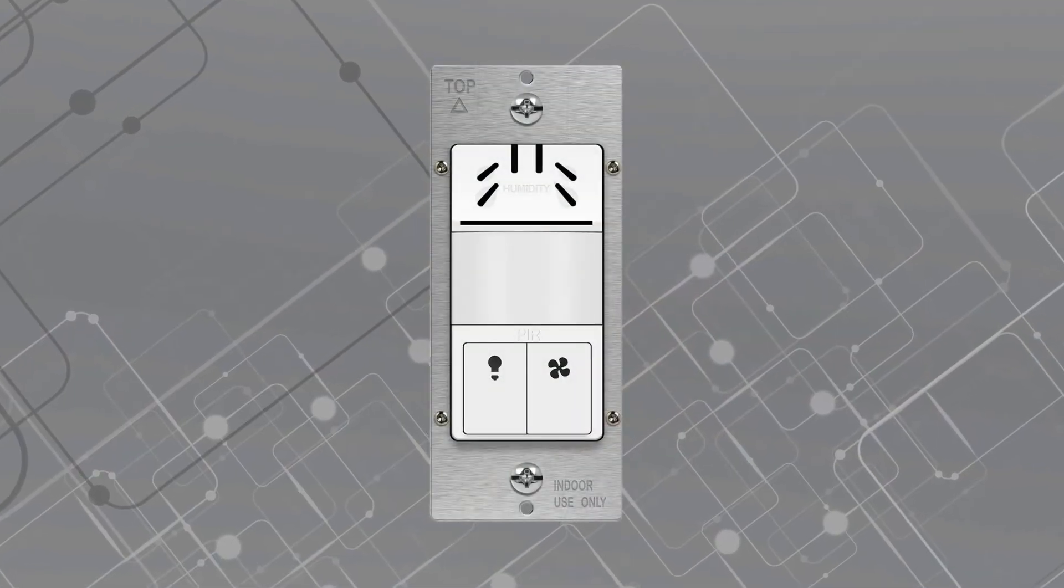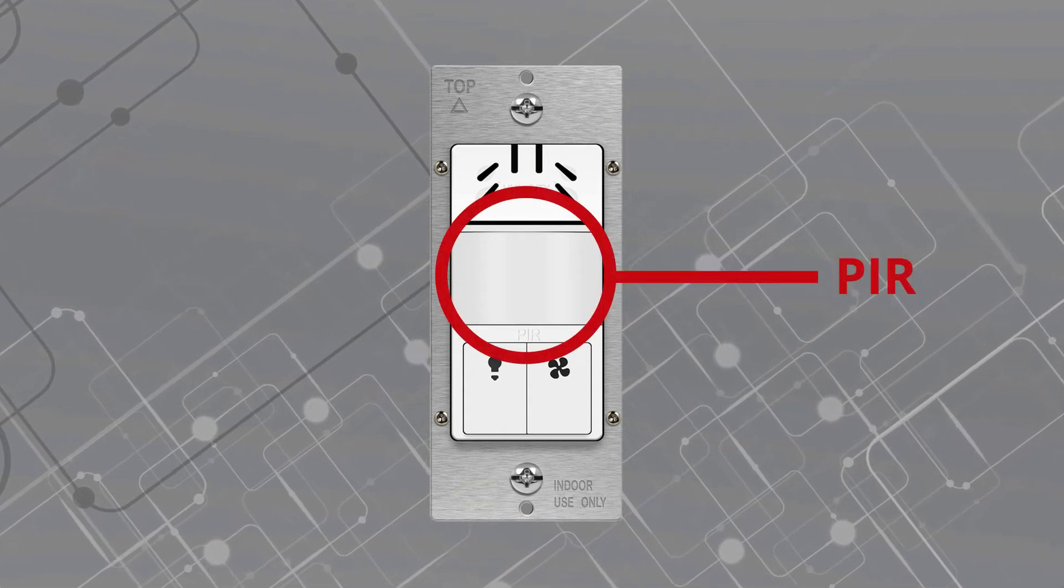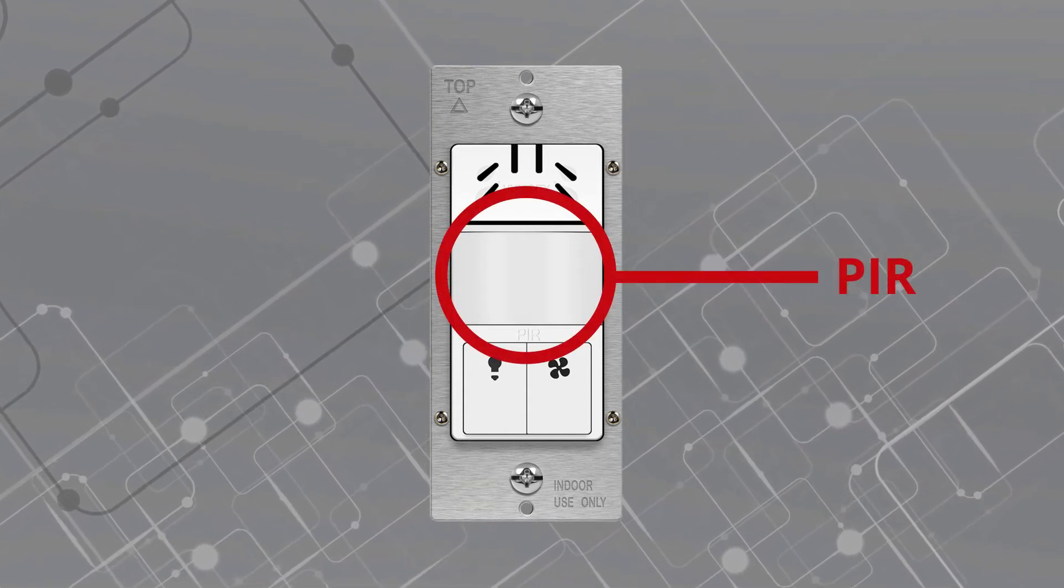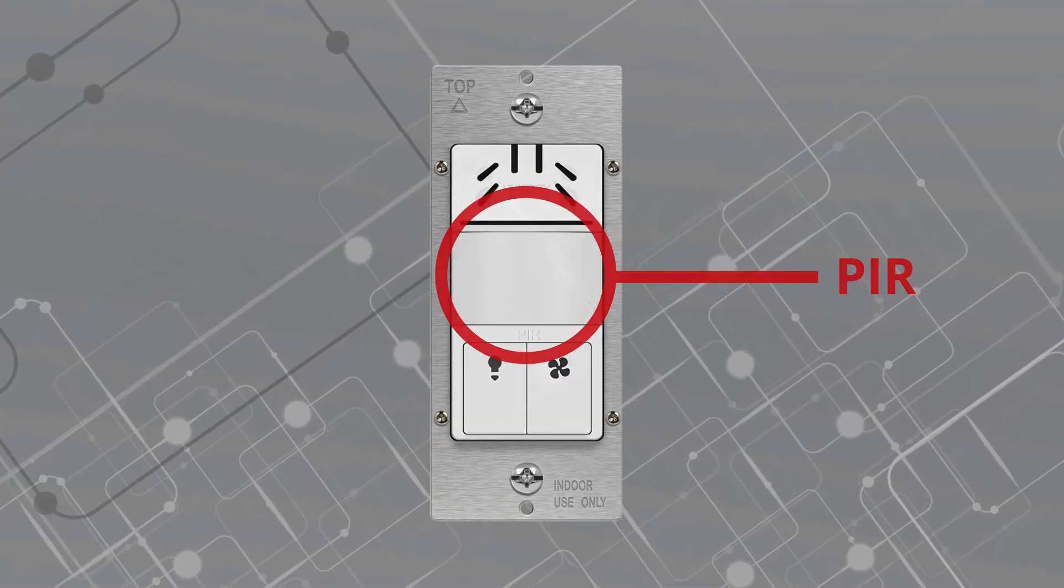For added convenience, Enerlite's patented 2-in-1 device combines PIR motion sensing for hands-free lighting control along with humidity management.